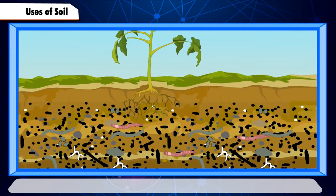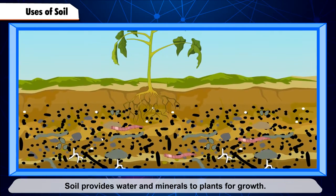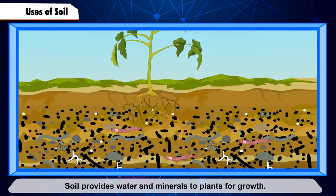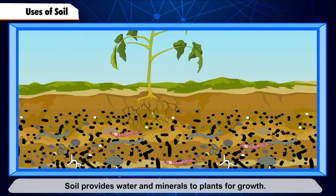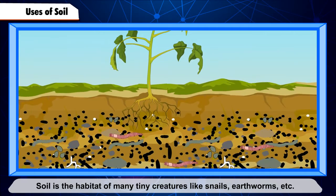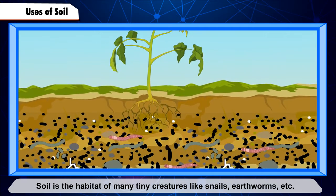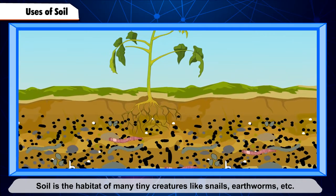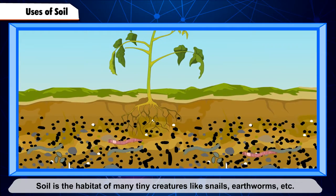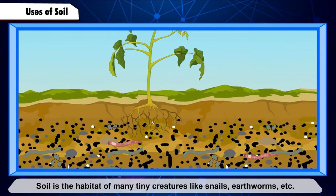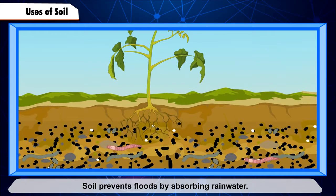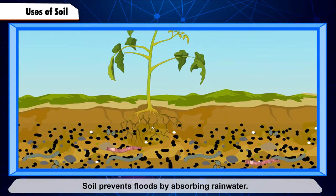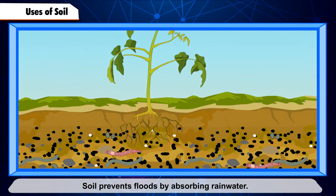Uses of Soil: soil provides water and minerals to plants for growth. Soil is the habitat of many tiny creatures like snails, earthworms, etc. Soil prevents floods by absorbing rainwater.